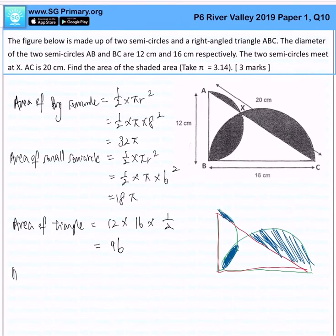So all in all, the area of the shaded area is 32 pi plus 18 pi minus 96, and take note pi represents 3.14.